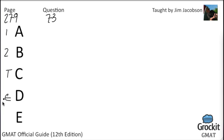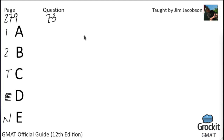As I always do when I cover data sufficiency questions, I write down what each answer choice stands for. Statement A means one alone is sufficient. Answer choice B means two alone is sufficient. C means they're insufficient on their own but together represent a sufficient quantity. D means either one is sufficient on its own. And answer choice E means neither — they are neither sufficient on their own nor sufficient together. I explain it every time because viewers may just jump to the problem they want.